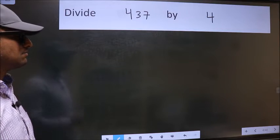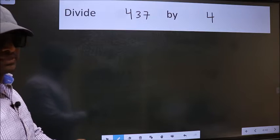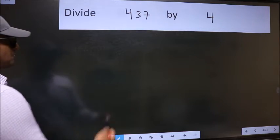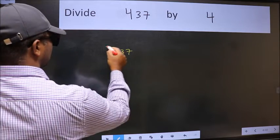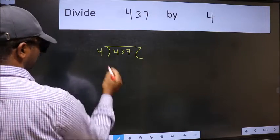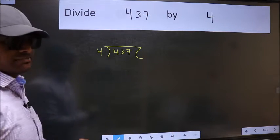Divide 437 by 4. To do this division, we should frame it in this way: 437 here and 4 here. This is your step 1.